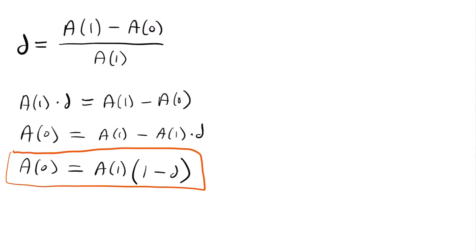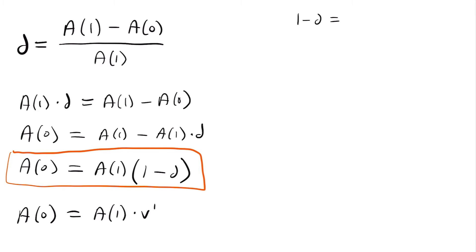This equation is very similar to our present value equation: the present value (initial investment) equals the accumulated future value times our present value factor v^t. So we find that (1 - d) acts as a present value factor, serving the same purpose as v. Therefore: 1 - d = v. And more generally, (1 - d)^t = v^t, meaning our present value factor for any number of years equals (1 - d) raised to that same power.